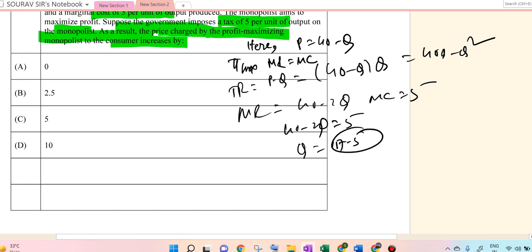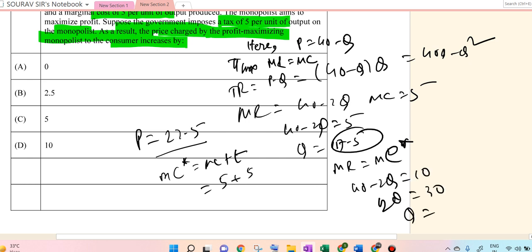Okay, so once Q equals 17.5, then P equals 40 minus 17.5, which is 22.5. Now the new MC is MC plus tax, so 5 plus 5 per unit equals 10. MR equals 40 minus 2Q equals 10, so 2Q equals 30, Q equals 15. Therefore P equals 25. Previously it was 22.5, so the change in price is 2.5.